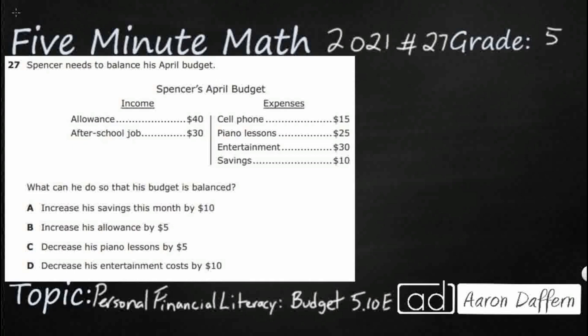Spencer needs to balance his April budget. We see Spencer's budget right here. And then what can he do so his budget is balanced? We see that term 'balance' or 'balanced' twice, so let's just make sure we get a clear picture of what we're talking about.